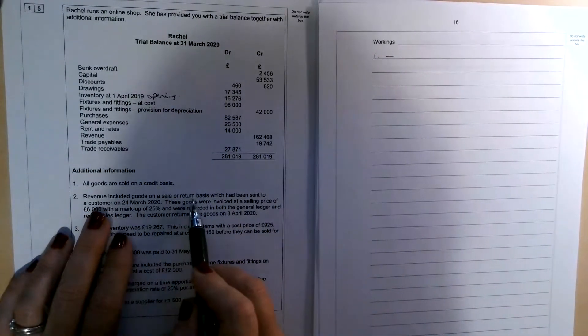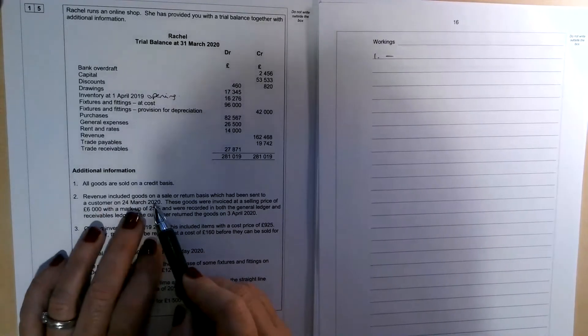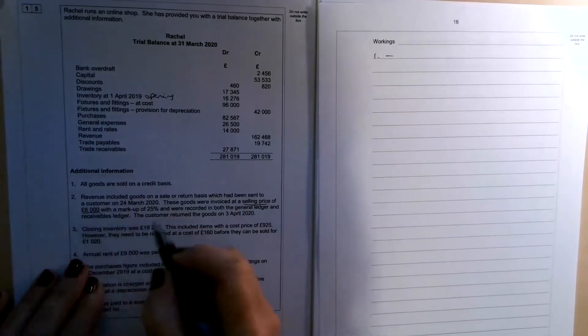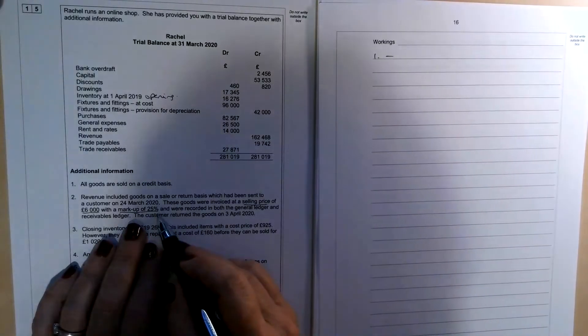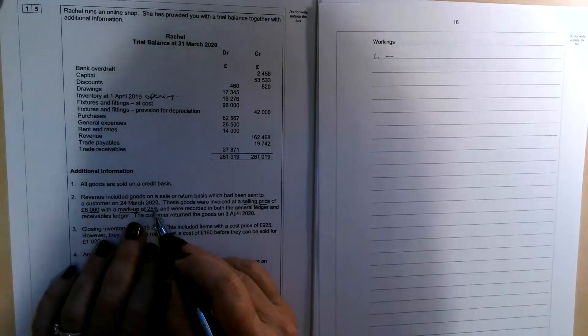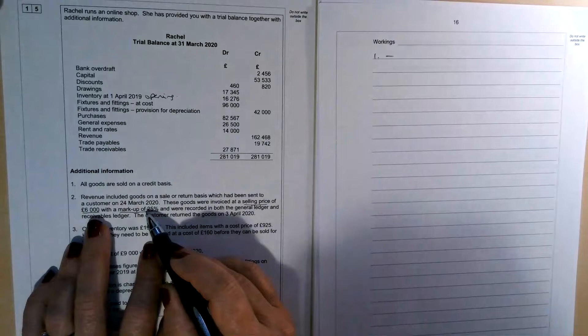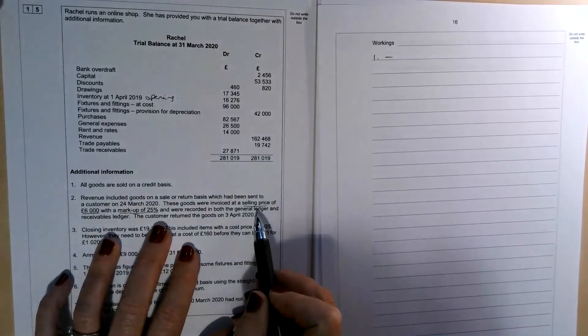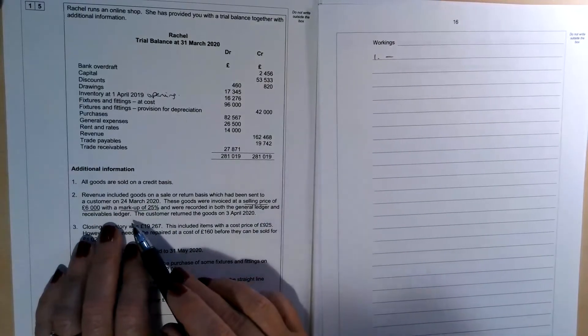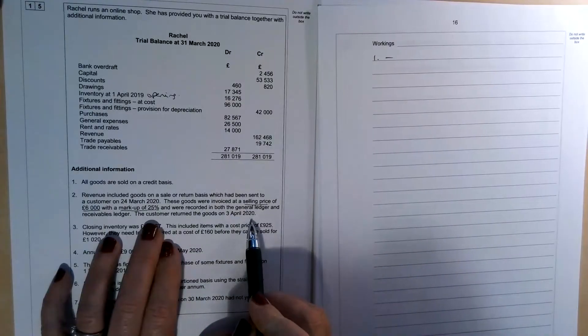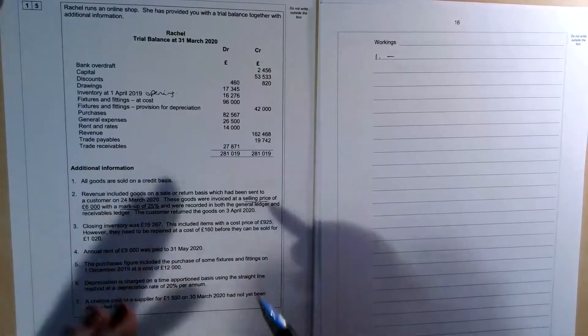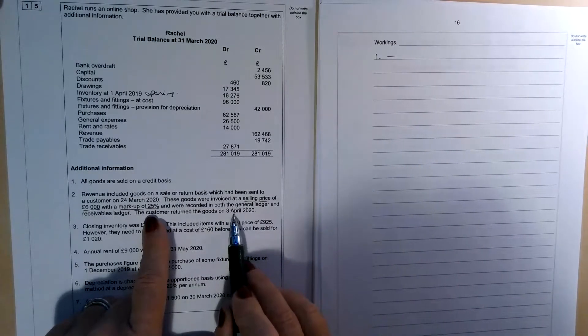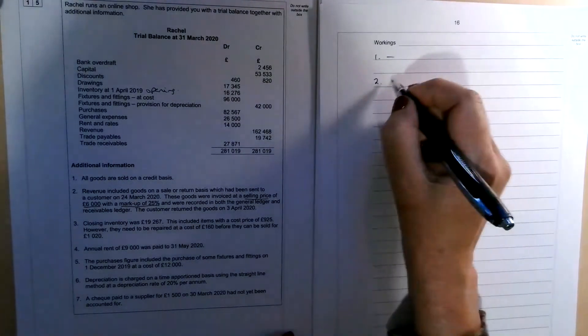Number two, revenue included goods on a sale or return basis, which had been sent to a customer on the 24th of March 2020. So that was shortly before the end of Rachel's financial year. These goods were invoiced at a selling price of £6,000 with a markup of 25%. Now remember when things are marked up, we start with cost of sales as the 100% figure. We add the markup, which in this case is 25%, which means that the selling price represents 125% of the cost price. Now they were sold to the customer for £6,000 and they've been recorded in both the general ledger. So remember the general ledger will be where you find the sales revenue account and also in the receivables ledger. So that's where the customer would be found. The customer returned the goods on the 3rd of April 2020. So if goods are sent to customers on a sale or return basis, we shouldn't be recording the actual sale until such times as that has been confirmed. And in this case, the sale never happened because the goods came back a little over a week later on the 3rd of April 2020. So what we've got to do for number two is unravel the sale or return.